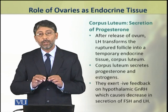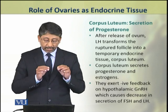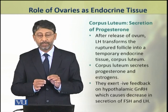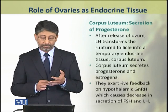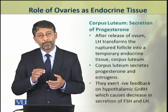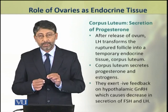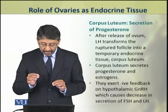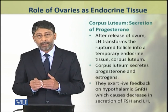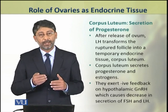Dear students, when the ovum is released, luteinizing hormone transforms the ruptured follicle into a temporary endocrine tissue called the corpus luteum. This corpus luteum secretes estrogen and progesterone. These estrogen and progesterone feed back negatively on the hypothalamic gonadotropin releasing hormone, which causes a decrease in the secretion of both FSH and LH.